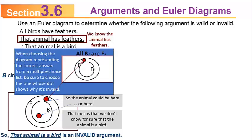When choosing the diagram from a multiple choice list, be sure to choose the one whose dot shows why the argument is invalid. The dot being outside the bird circle shows why the conclusion 'that animal is a bird' is invalid. Always pick the variation that shows why the particular argument is invalid.